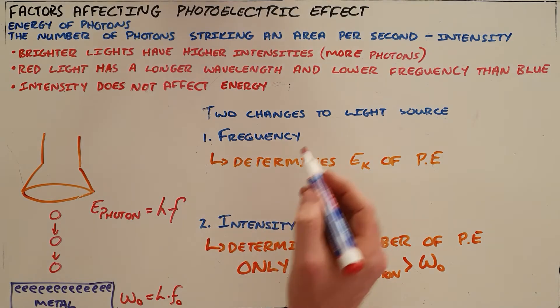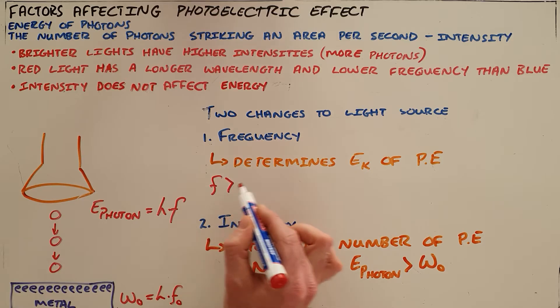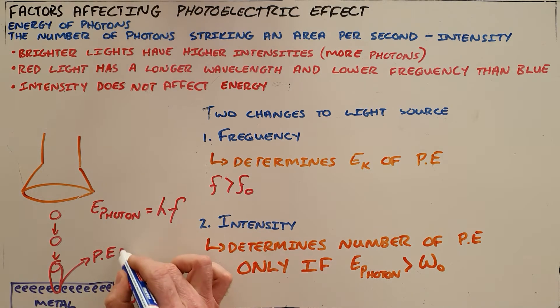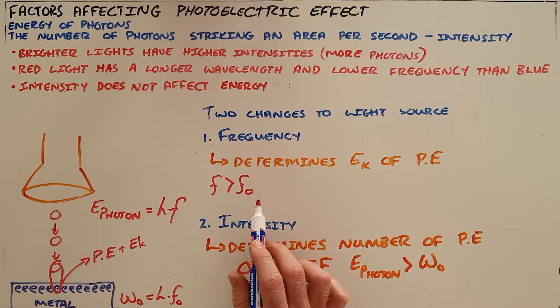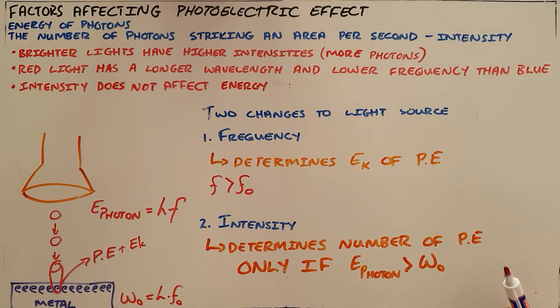So we know that by changing the frequency of a light source until we get a frequency that exceeds the threshold frequency, at which point electrons are able to absorb a single photon which gives them enough energy to escape and become a photoelectron. Thereafter, if we continue to increase the frequency, we would add more kinetic energy to those photoelectrons. So the first change we can make to a light source is by changing the frequency.